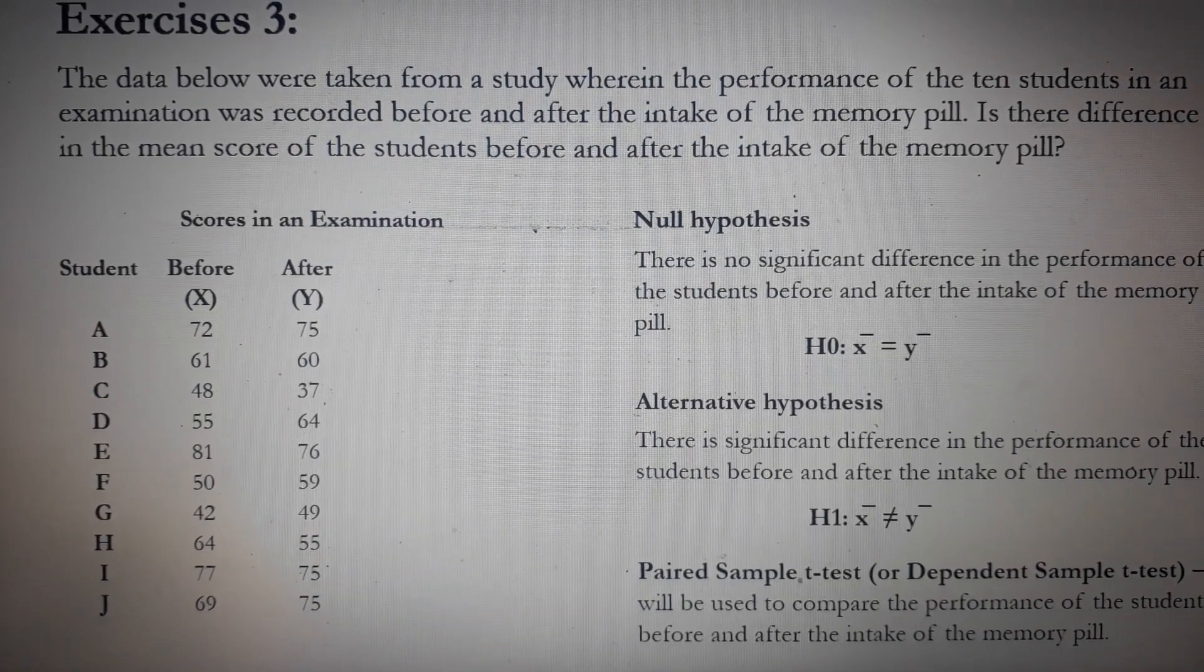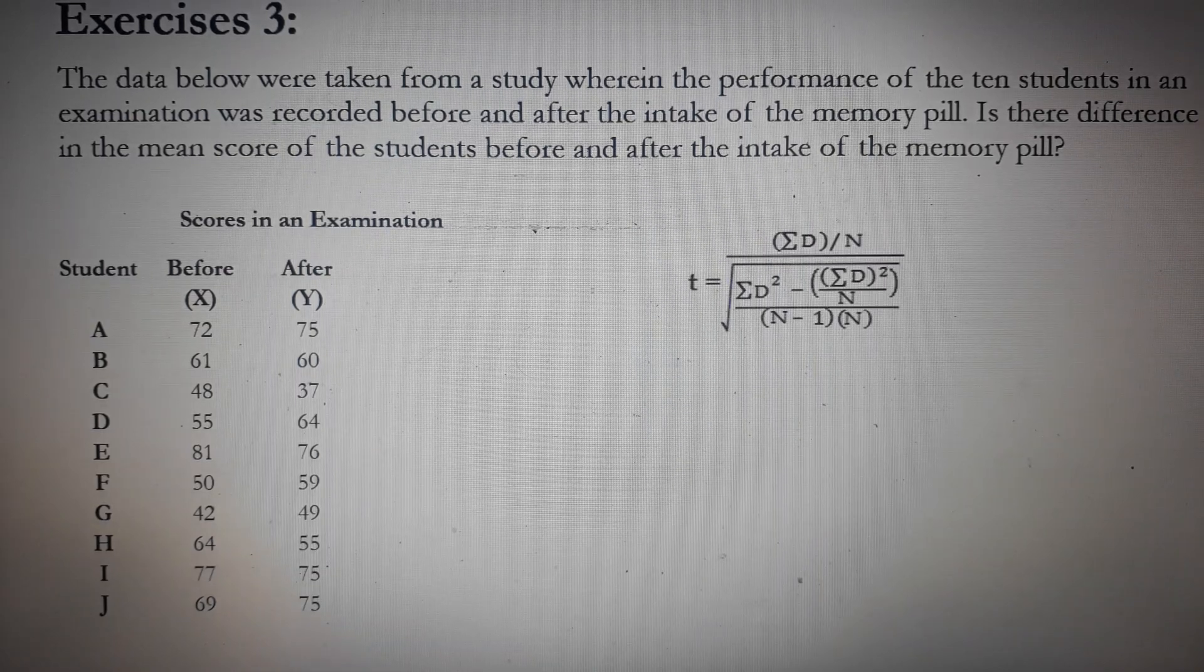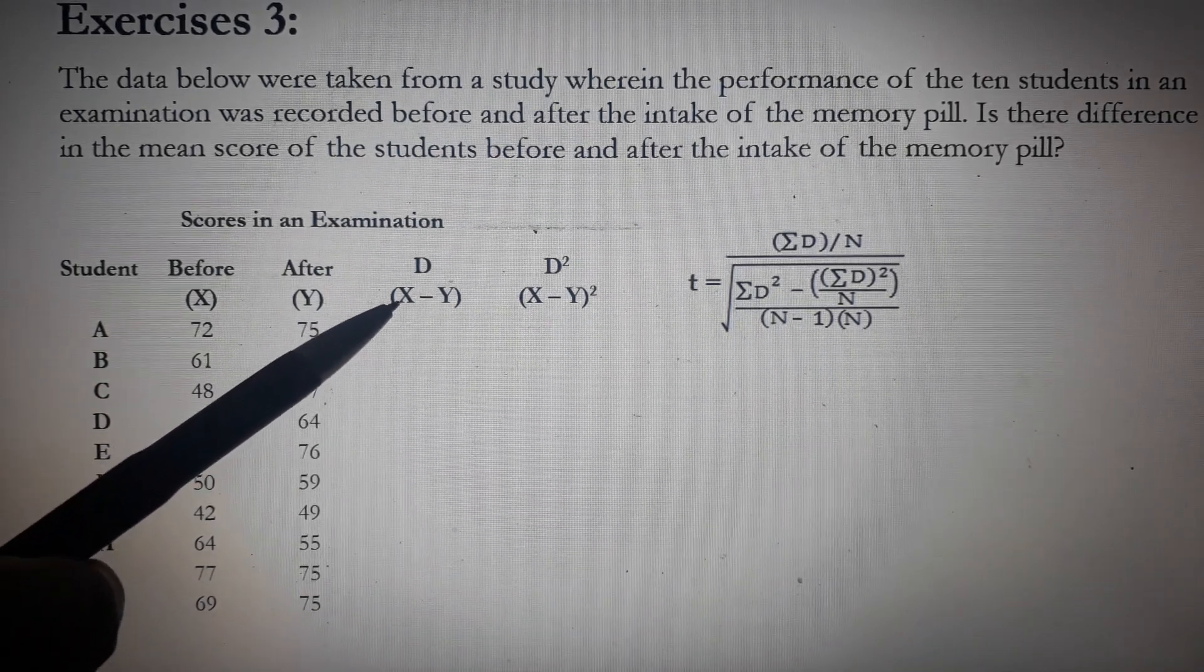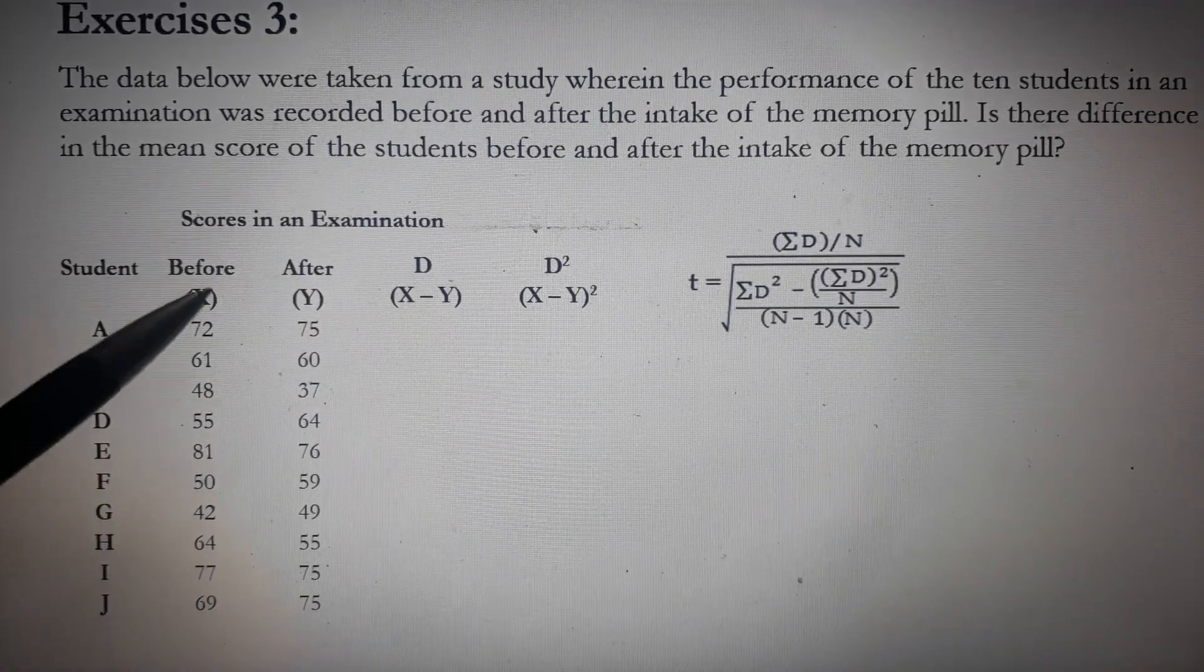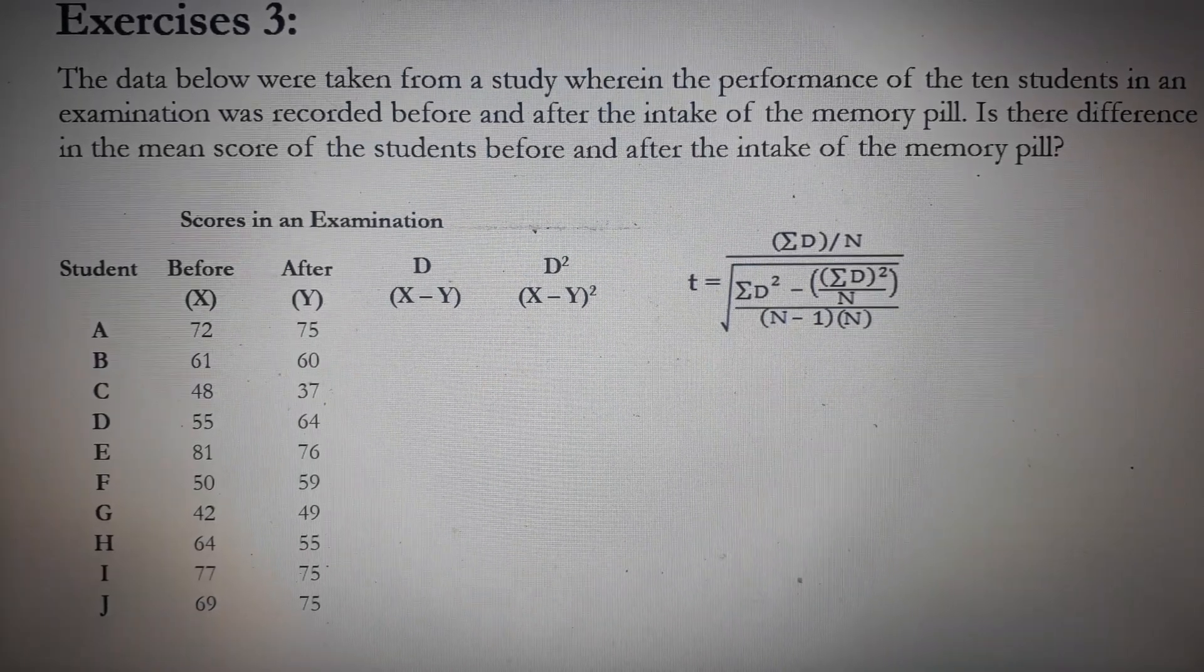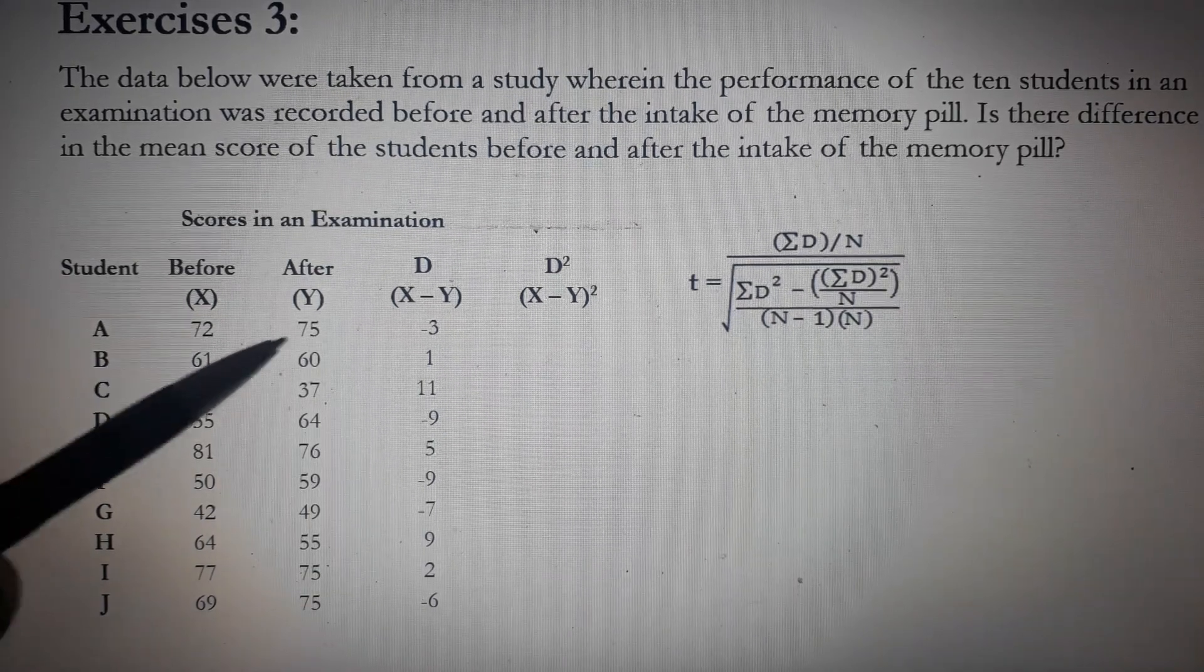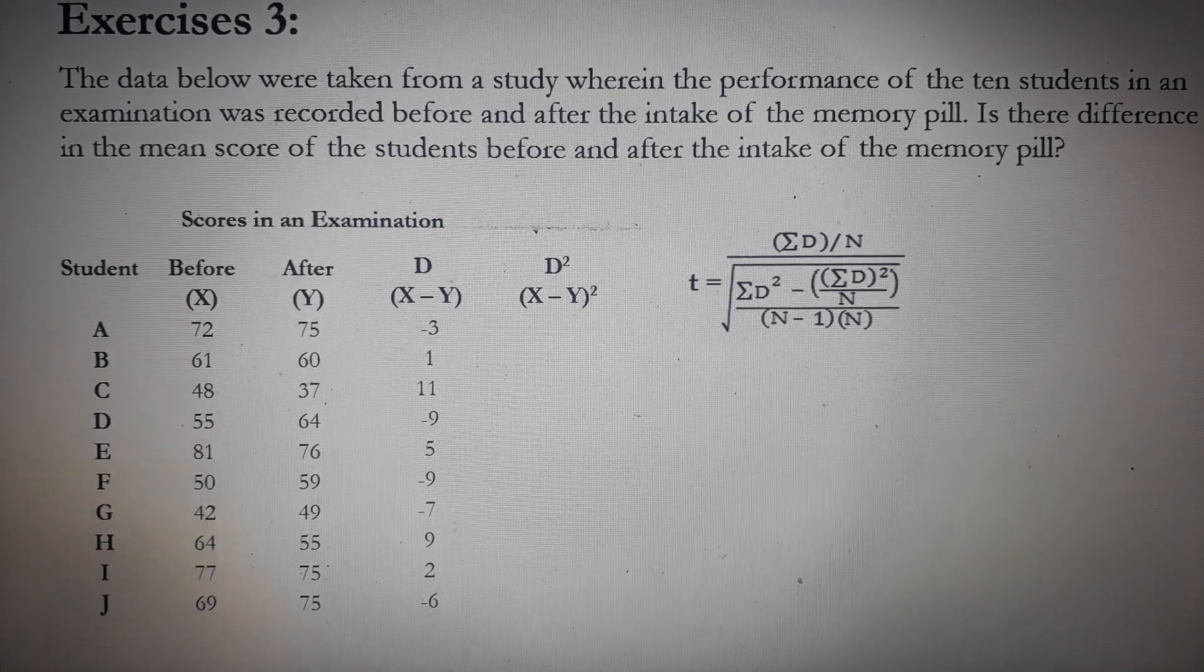Let's solve the problem. To solve the problem, we need to add two more columns. The additional column here is labeled as D. It's actually X minus Y, or the score before minus the score after. And then, these are the numbers. The first entry is negative 3, which came from 72 minus 75. One here is from 61 minus 60 and so on.